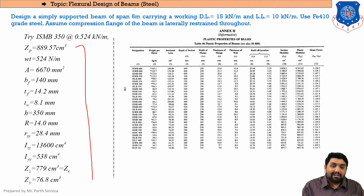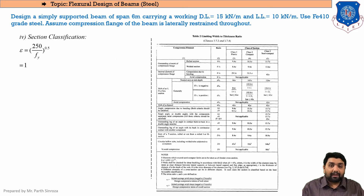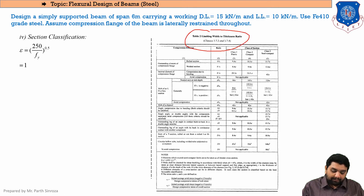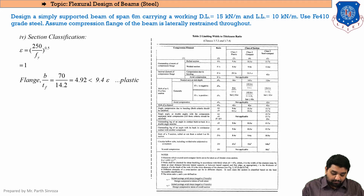The properties of ISMB 350 are taken directly from the IS code page 138 and from the steel table. The next step is section classification, referencing page 18 of the IS code, table 2. Since Fy = 250 MPa, the epsilon (ε) value = 1. We proceed to classify the flange and web.